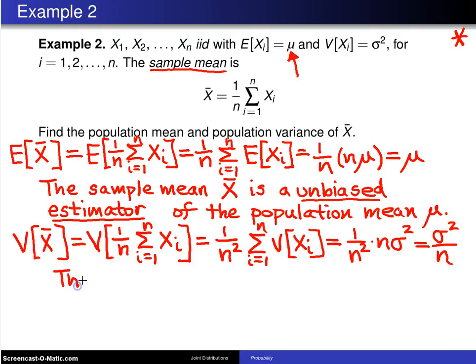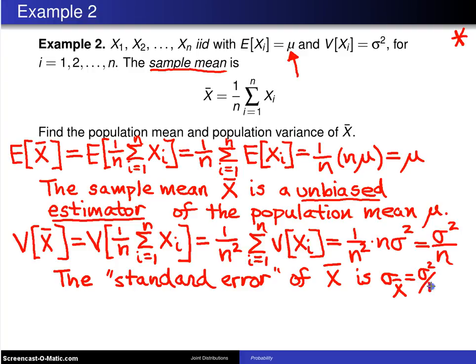Statisticians would use the following words to describe this. If you take the square root of this value, you get the standard deviation of x̄. The standard deviation of x̄ is the standard deviation of x̄, which we just derived to be σ² over n.